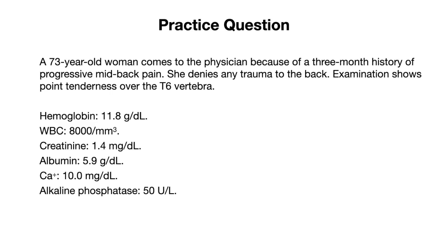A 73-year-old woman comes to the physician because of a three-month history of progressive mid-back pain. She denies any trauma to the back. Examination shows point tenderness over the T6 vertebra. Lab findings reveal a hemoglobin of 11.8, a leukocyte count of 8, creatinine of 1.4, albumin of 5.9, calcium of 10, and alkaline phosphatase of 50.